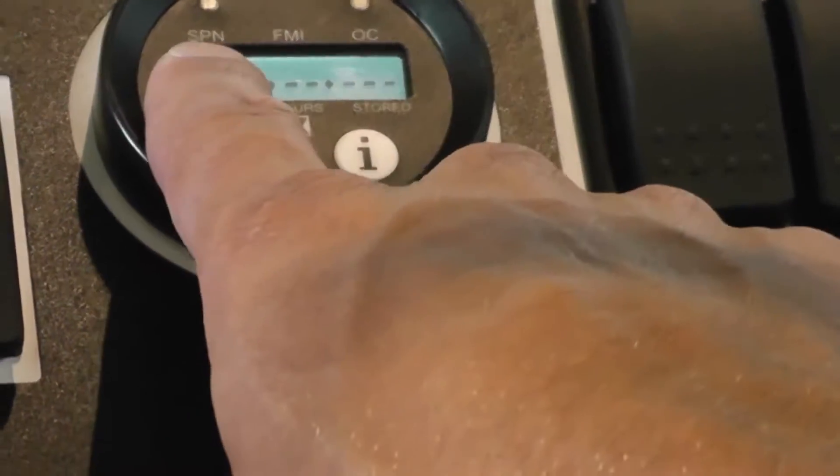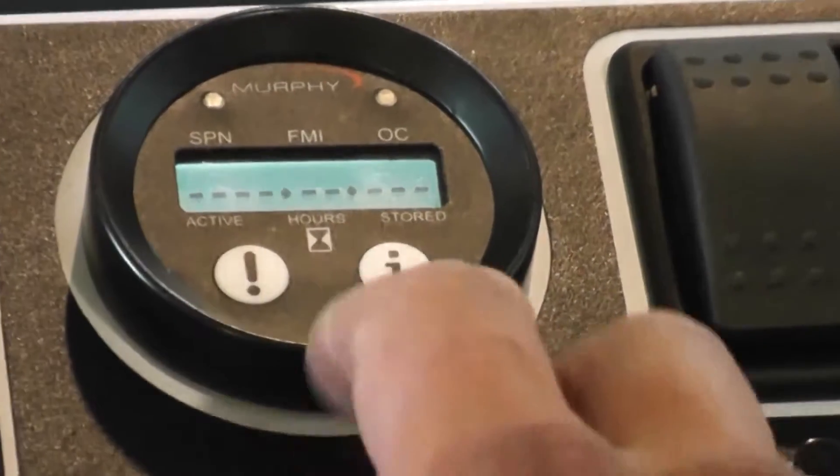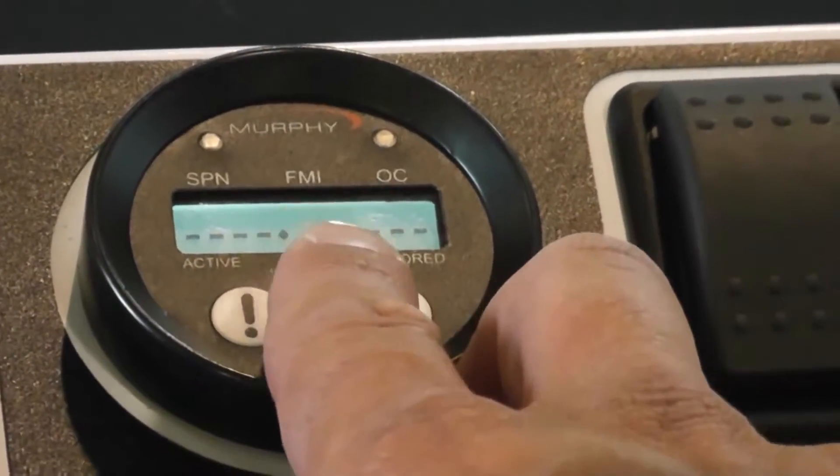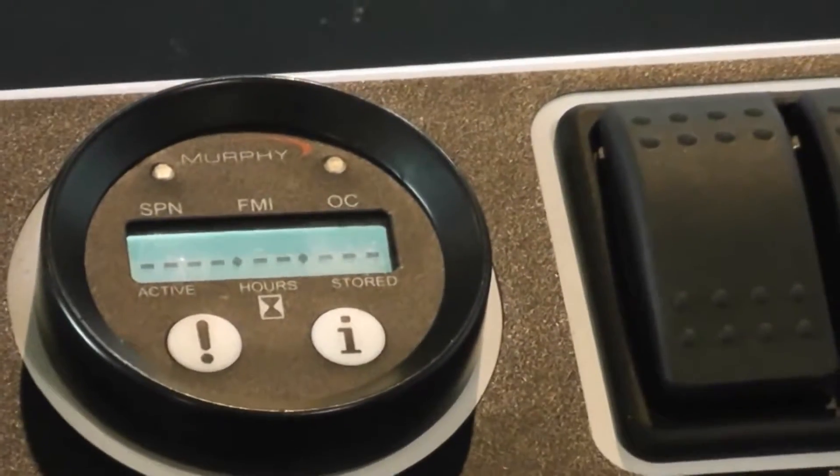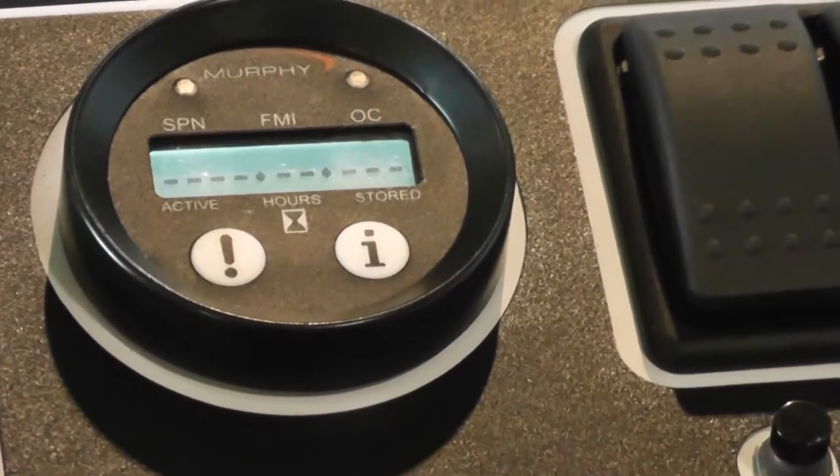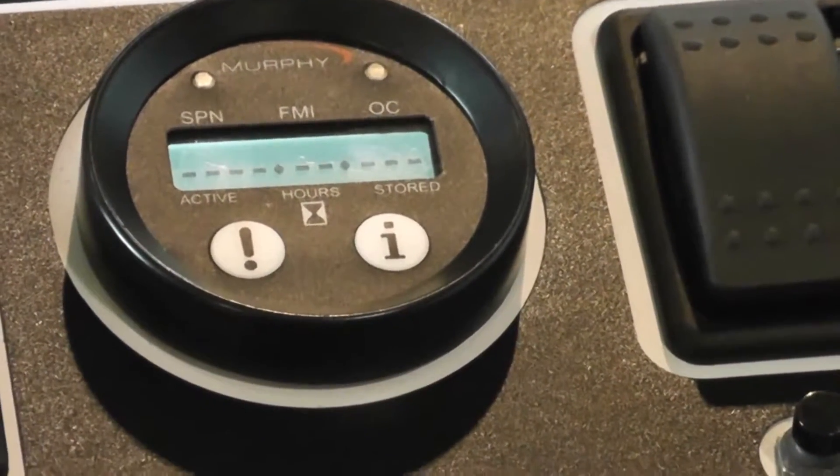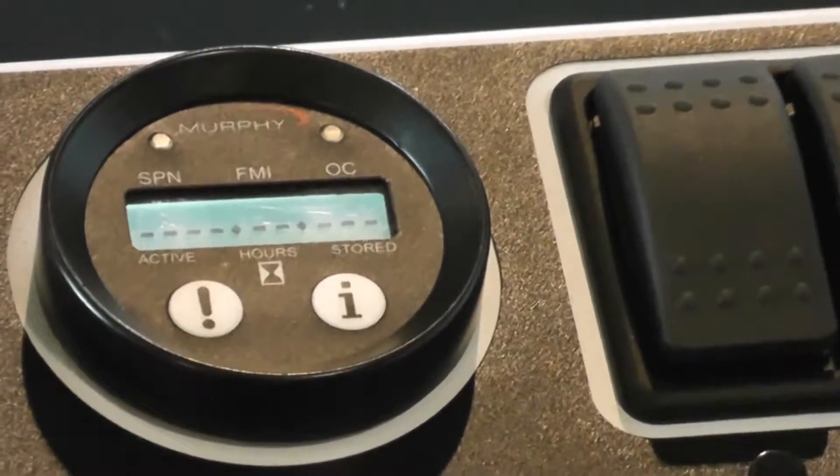The first part of the number, the SPN, tells you which device had the issue. The next number, the FMI, tells you what type of fault it is. Was it an open fault, a short to ground fault, or a short to battery fault? The last number, the OC, is the occurrence count. How many times has it happened in the history of the machine? These faults can all be erased using the CAT service tool.